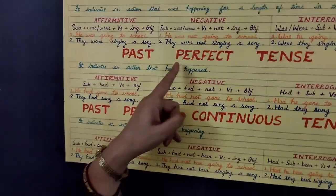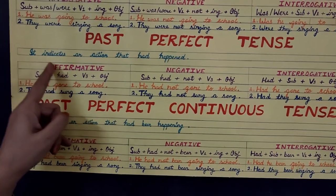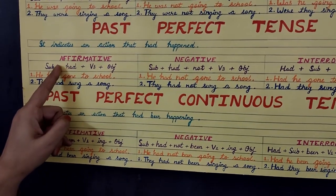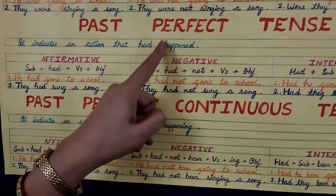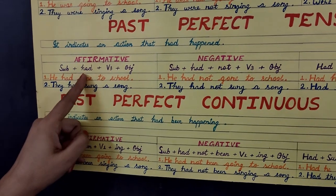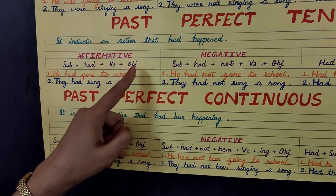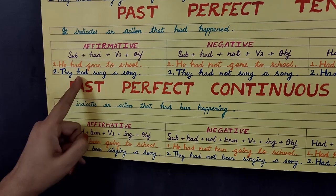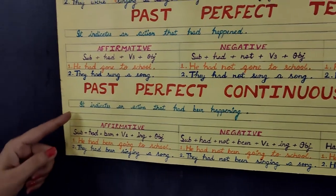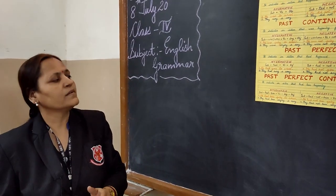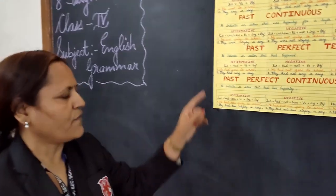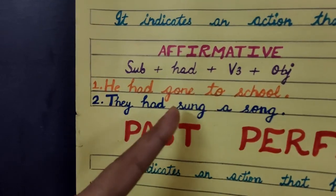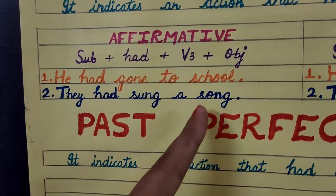Now let's move towards past perfect tense. It indicates an action that had happened. Here you can see the structure of the affirmative sentence: subject plus had plus verb three plus object. For example: He had gone to school. They had sung a song. Here he and they are the subject, had is the helping verb, and gone and sung are the third form of the verb. School and song are the object.